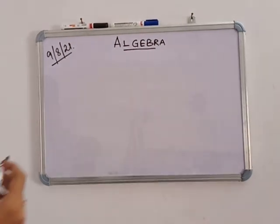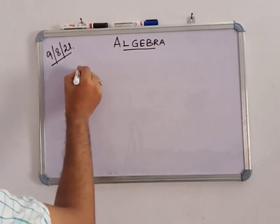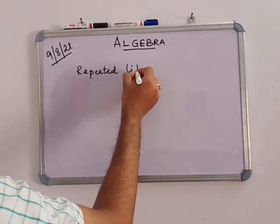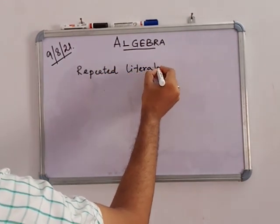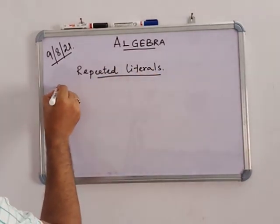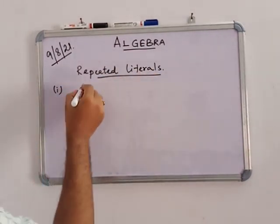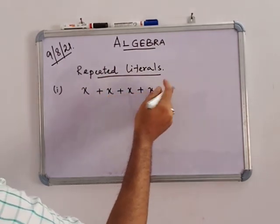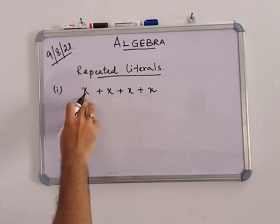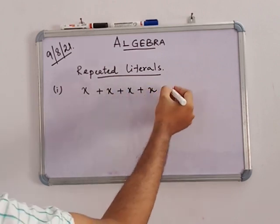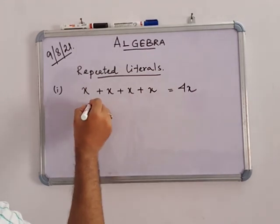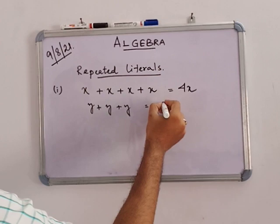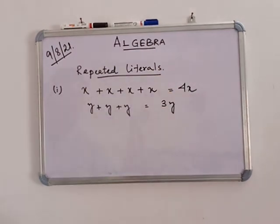Now a very important topic: repeated literals. If you add the same literal repeatedly — X plus X plus X plus X — that means 4X. Similarly, Y plus Y plus Y equals 3Y.